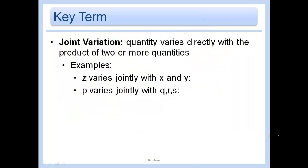Now, joint variation is when the quantity varies directly with the product of two or more quantities. For example, what do I mean? Z varies jointly with X and Y. So Z equals A, X, Y. That's all.